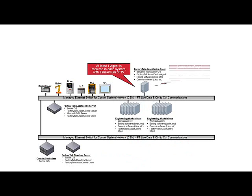The final component is the FactoryTalk Asset Center agent. At least one agent is required in each FactoryTalk Asset Center system, with a maximum of 15 as of version 6.0. The agent is used for any scheduled tasks, such as a search or a disaster recovery schedule. When used with disaster recovery, an asset's configuration software must be present as well. For example, ControlLogix assets require Studio 5000 Logix Designer and RSLinx Classic. No software package requires activation when used for disaster recovery purposes.